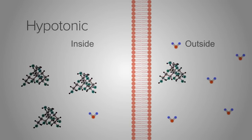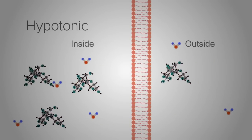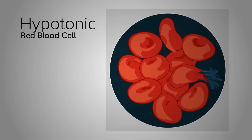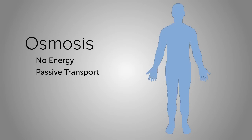With a hypotonic solution, water molecules enter the cell and in the case of a red blood cell cause it to swell up. The process of osmosis doesn't require any energy in the form of ATP to occur and is known as a form of passive transport. Osmosis is important in the human body for the uptake of water used for vital cell processes.